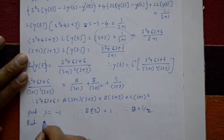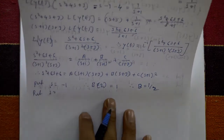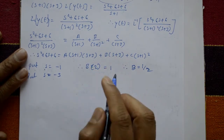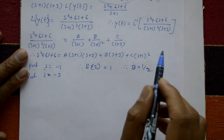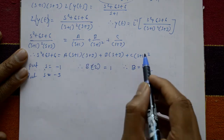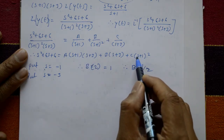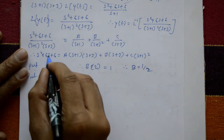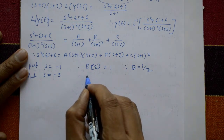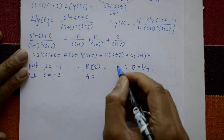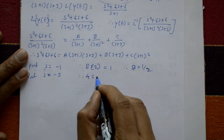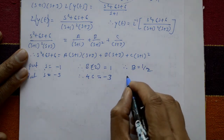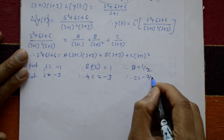Now put s equal to minus 3. The terms with s plus 3 cancel. We get minus 3 plus 1 whole squared equals minus 2 whole squared equals 4. Substituting minus 3: 9 minus 18 plus 6 equals minus 3, so 4C equals minus 3. Therefore C is equal to minus 3 by 4.